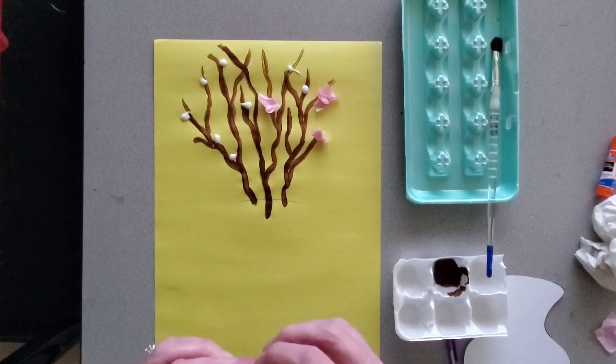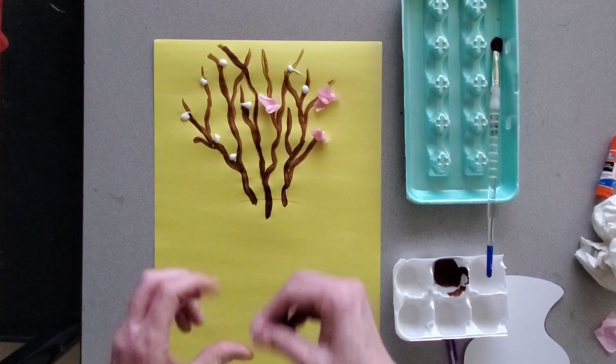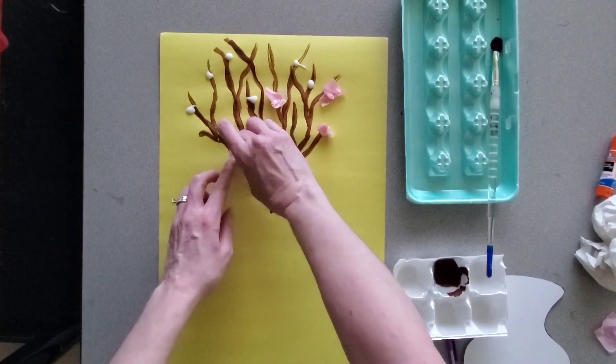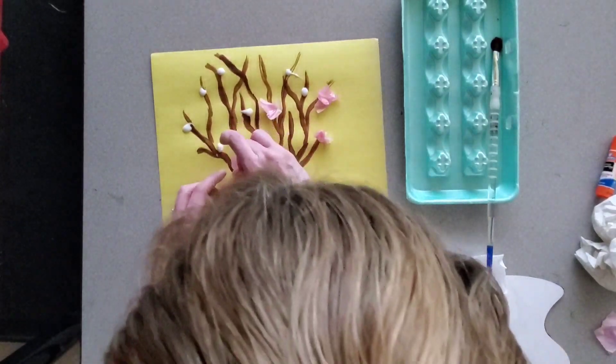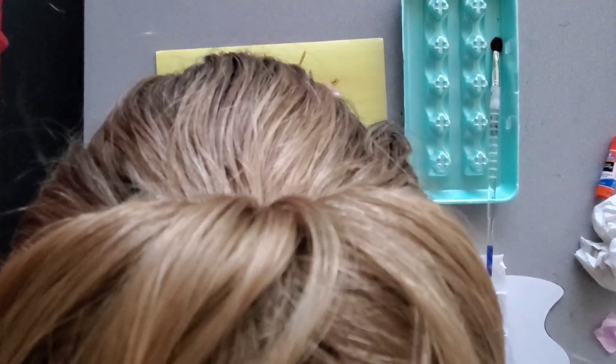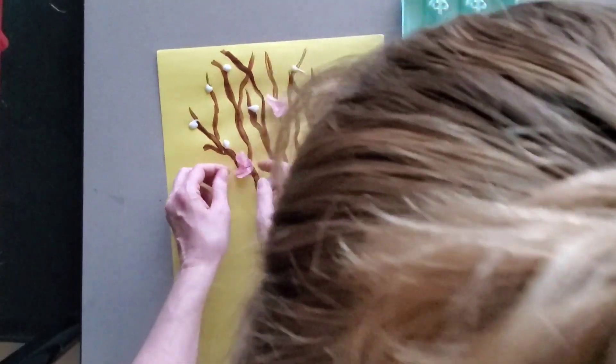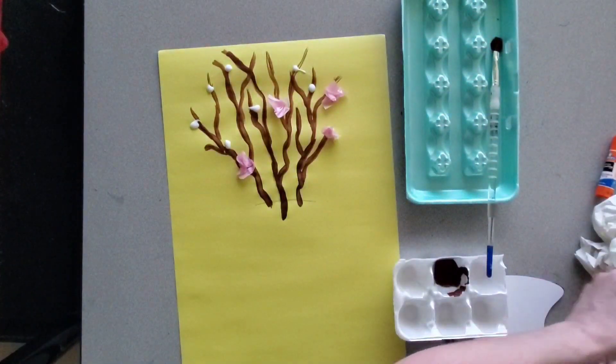I just went ahead and put big dollops of glue wherever I decided I wanted flowers. You get two squares of tissue paper, fold them up, and glue them down the best that you can.